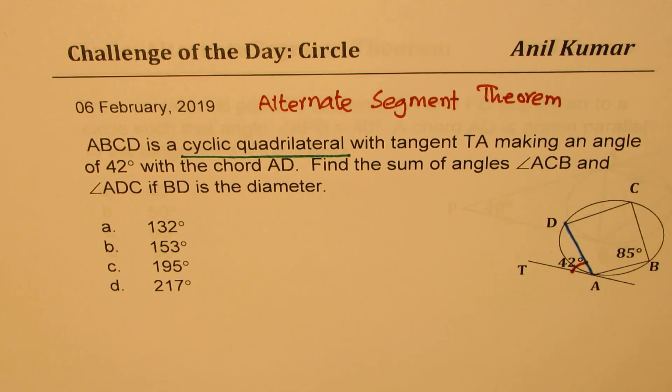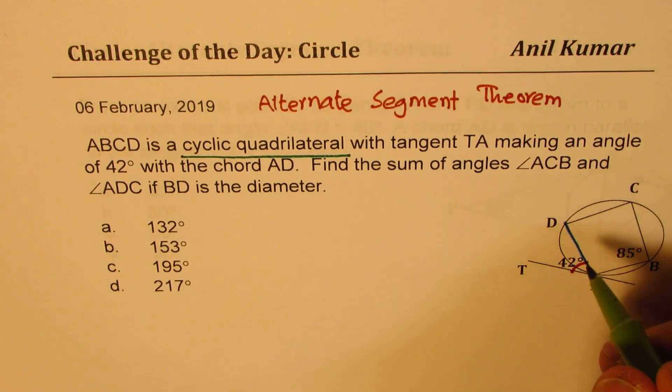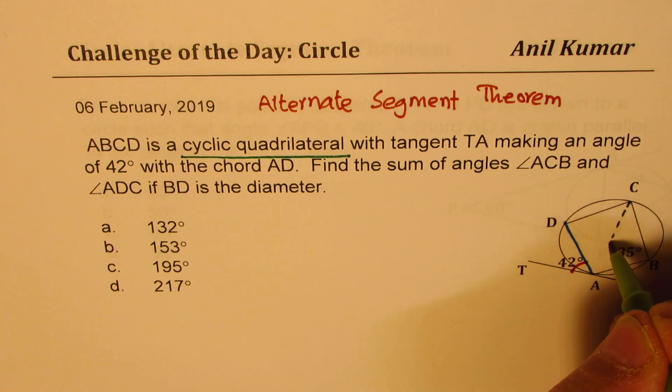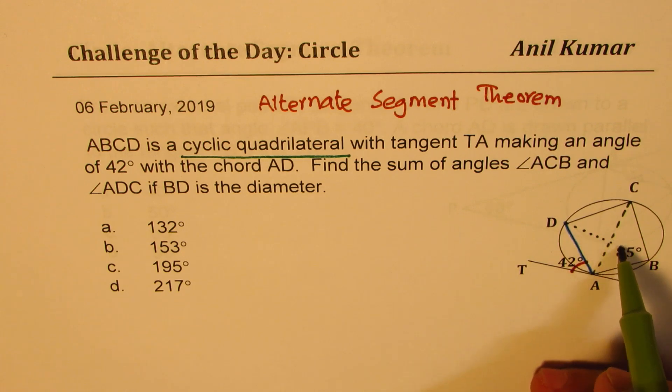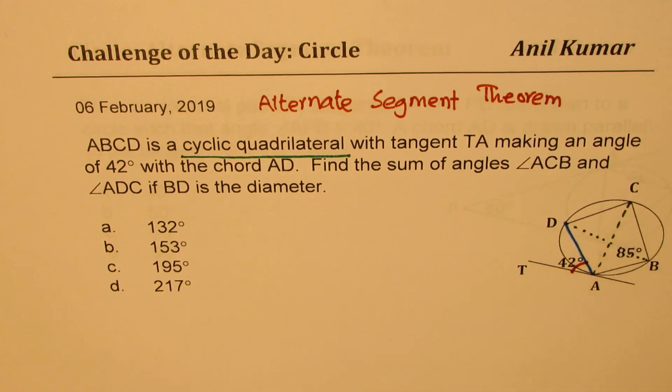Now alternate segment theorem should always be applied when you have a triangle inside a circle. So you may like to draw or connect opposite points. For example, you may connect this point or you may connect that point to figure out the angles. Well, that is your choice.